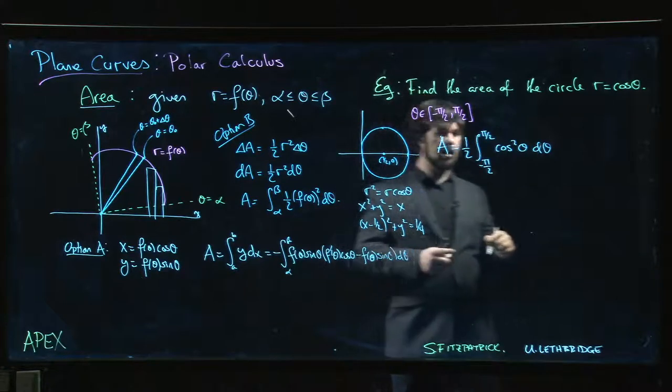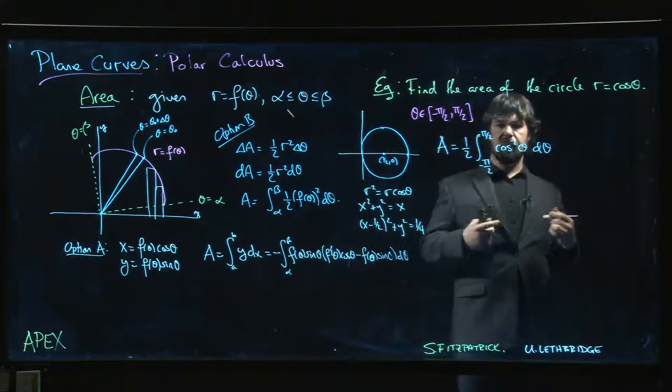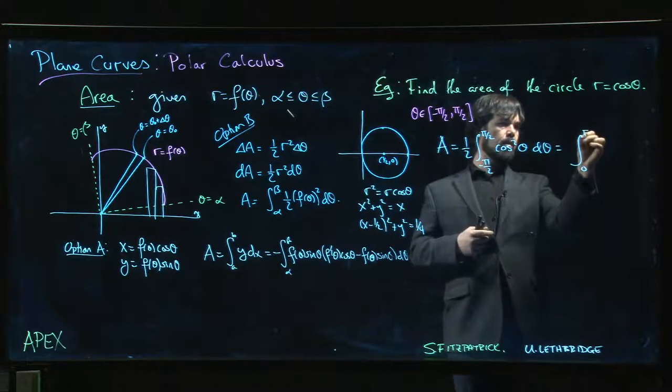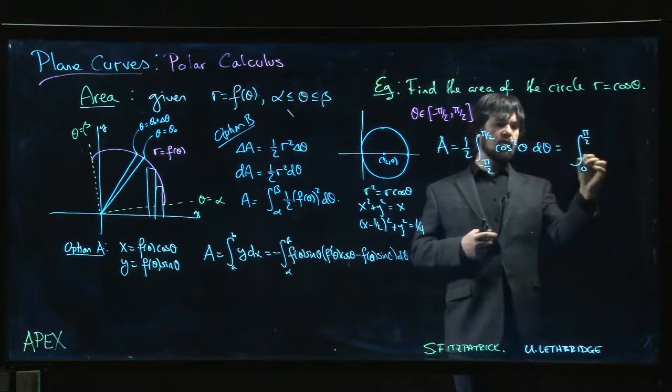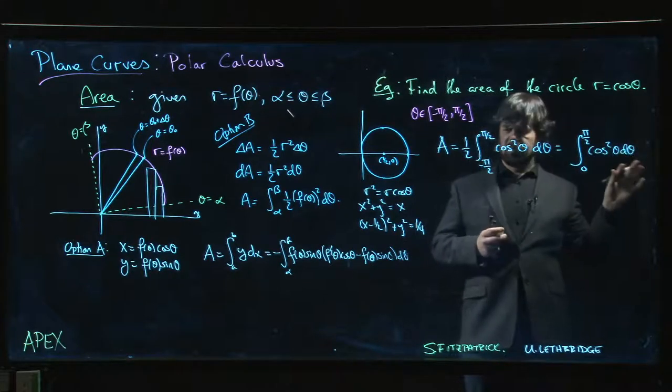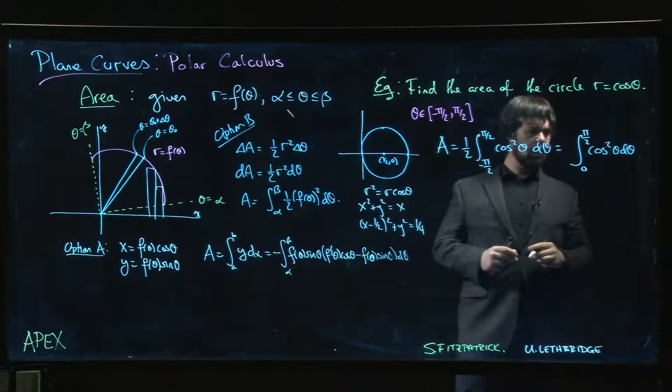Now, you might want to use a bit of symmetry here. We have an even function between symmetric limits, so we can go from 0 to pi over 2 and double things. Save us a little bit of trouble in the end. At least it gets rid of that 1 half.